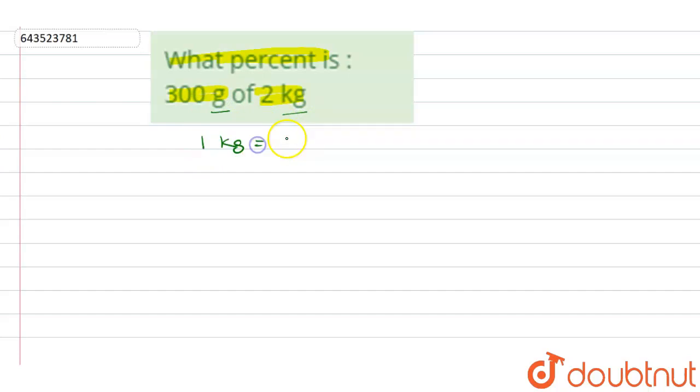in one kilogram there is total 1000 grams. So if we have to convert kilogram into gram, we have to multiply that value with 1000. So when we multiply 2 with 1000, we will get 2000. So in 2 kilogram there are 2000 grams.